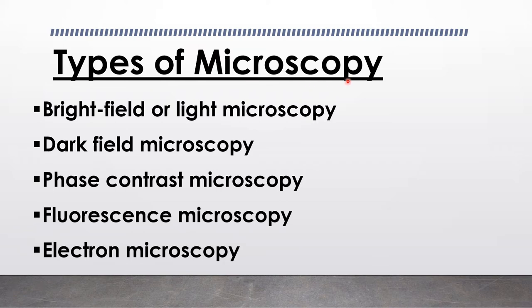The various types of microscopy are: bright field or light microscopy, which is used in day-to-day laboratory practice; dark field or dark ground microscopy; phase contrast microscopy; fluorescence microscopy; and electron microscopy, which we use for diagnosis of viral diseases.